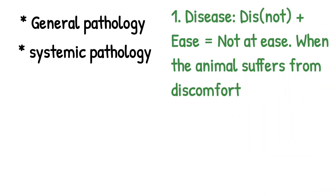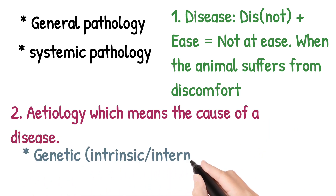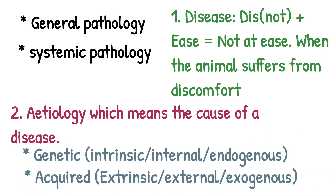Let's move on to the definition of some terms commonly used in veterinary pathology. Number one is disease. Disease is a very common term and is actually a Latin word — 'dis,' meaning not, plus 'ease,' meaning not at ease. When an animal suffers from discomfort, the animal is said to be diseased. Number two is etiology, which simply means the cause of a disease.